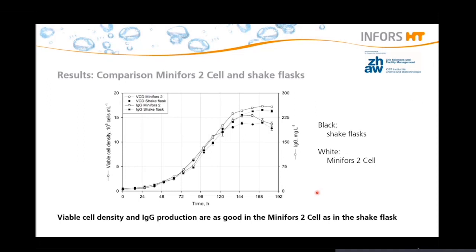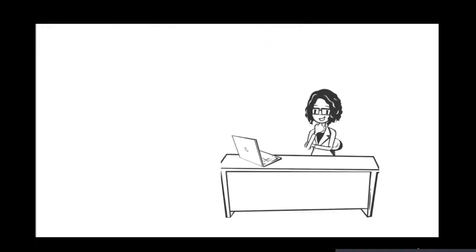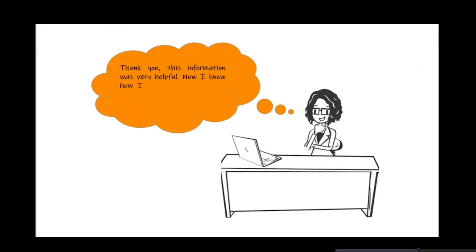But why are the results only slightly better for the Miniforce 2 compared to the shake flask? Actually this is even a great result, because by further improving the process in the bioreactor — for example by adding feed — you will reach way better and higher yields within the bioreactor. That makes sense, thank you. This information was very helpful and now I know how I can start to transfer any process into a bioreactor.